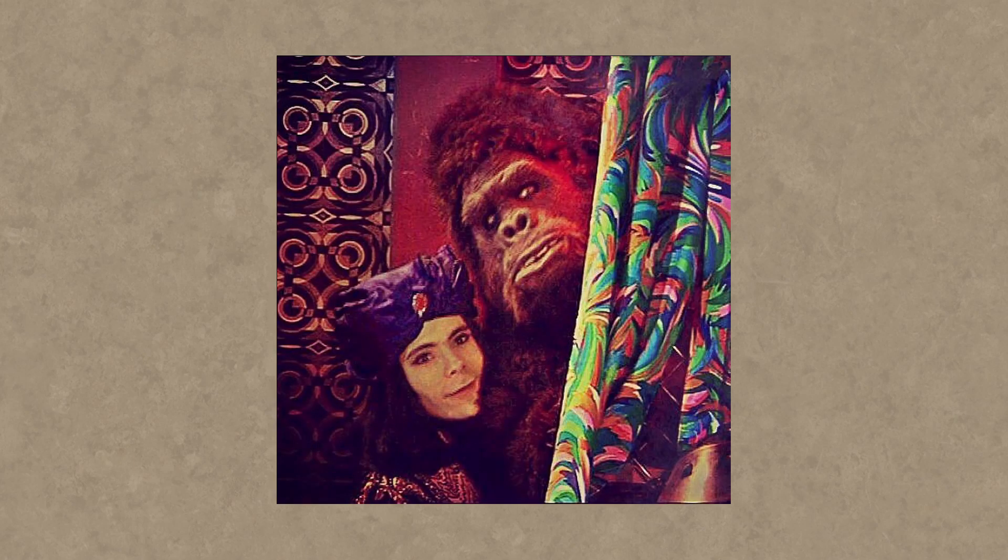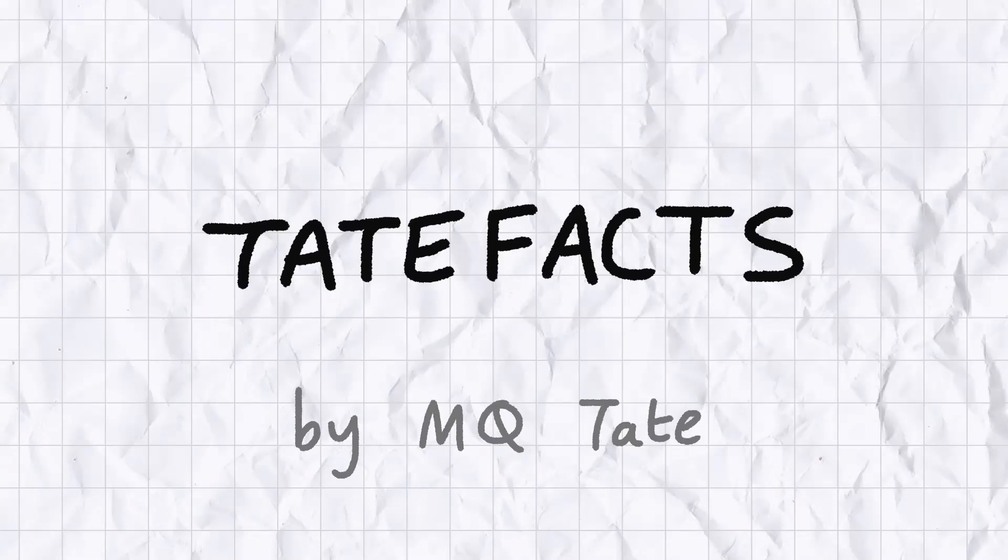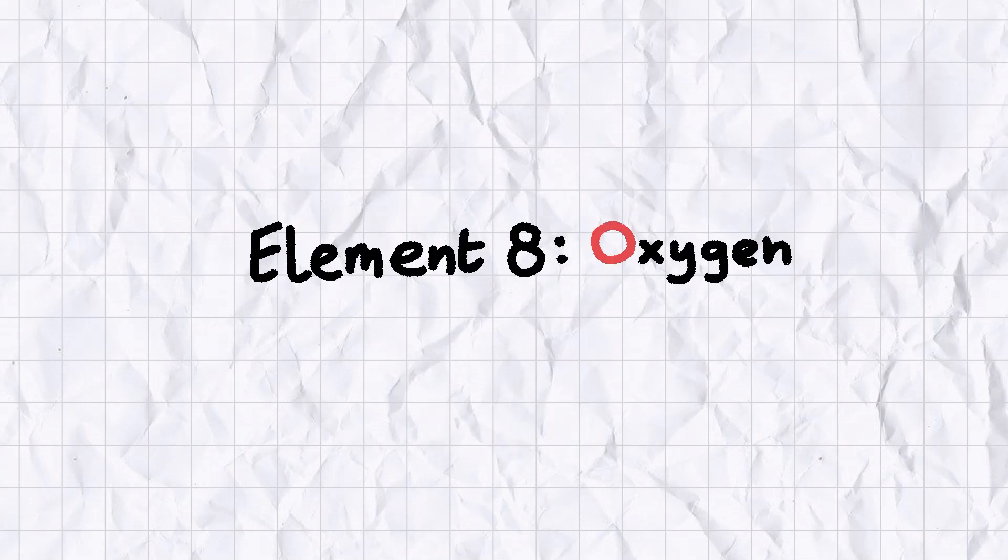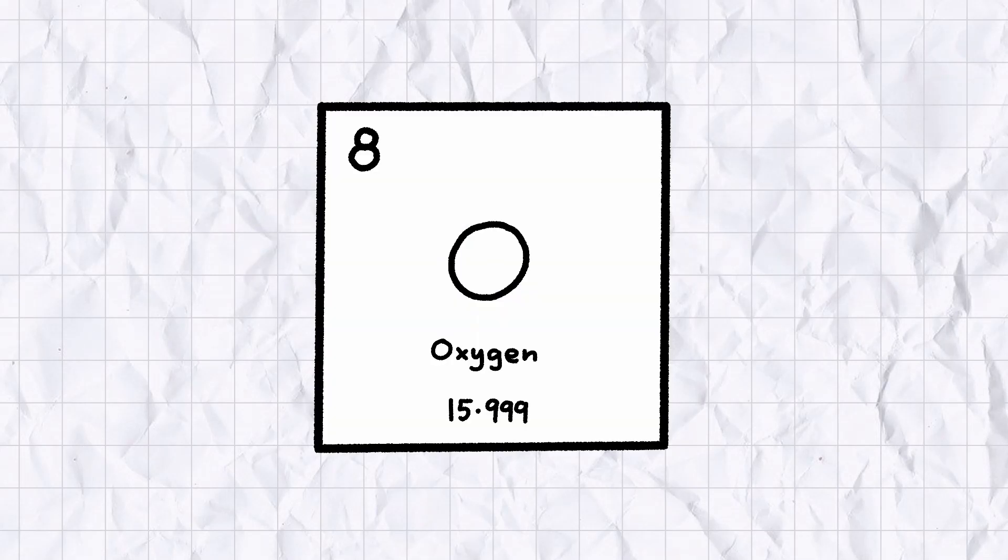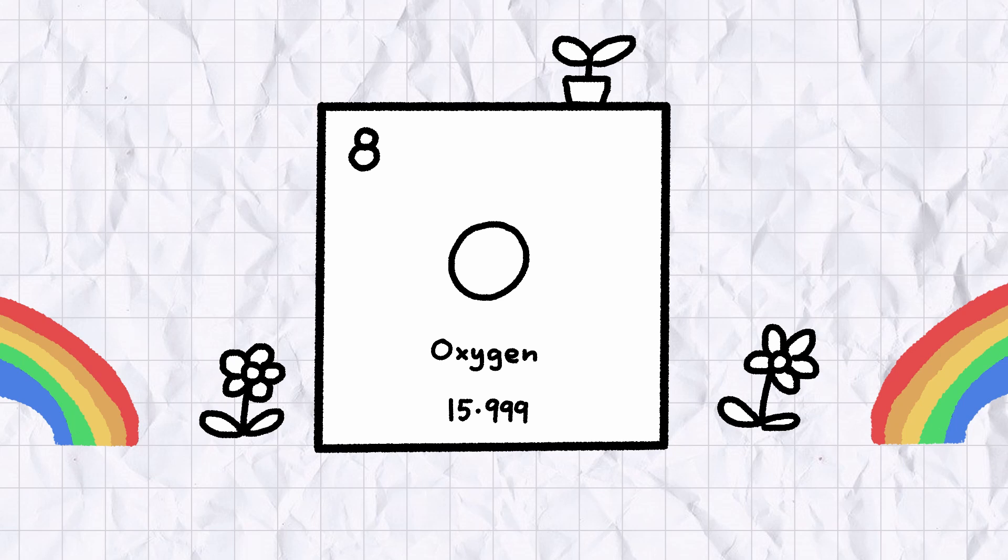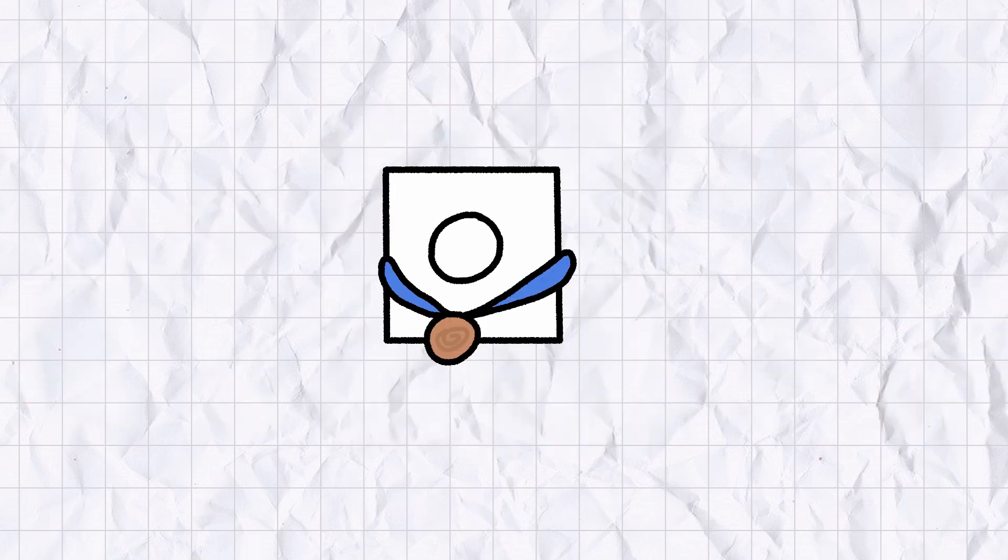Hey, look, it's oxygen! That element that keeps everything on the planet alive and stops our lungs from decompressing into squishy pink crisp packets. By mass, oxygen is the third most common element in the universe and the most common element on Earth.